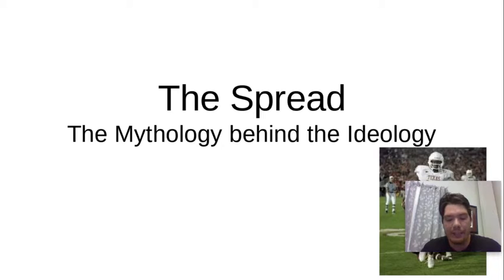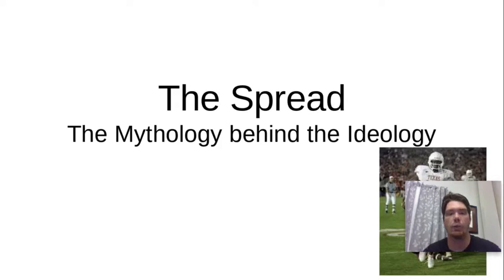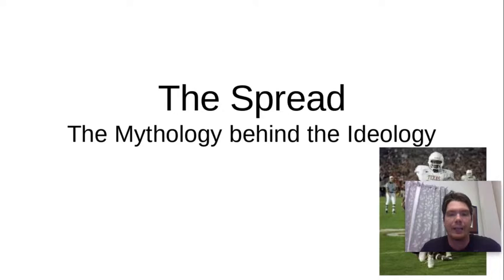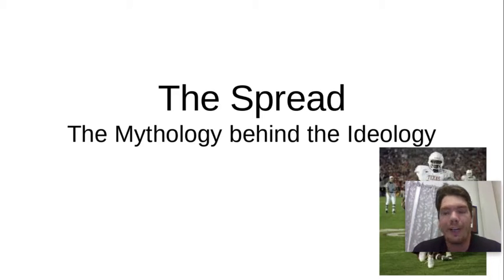Last time we went behind a Houston veer and broke that down X's and O's wise. We took off last week with the 4th of July holiday — I was on vacation out of town — but we're back this week talking about Dutch Meyer and TCU Horned Frogs and the spread formation, and a football book he put out back in 1952.